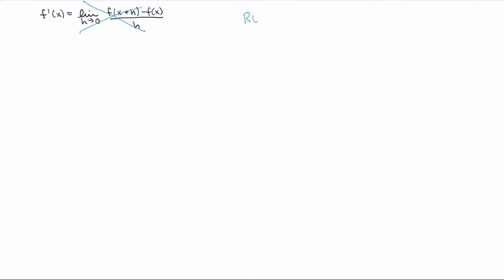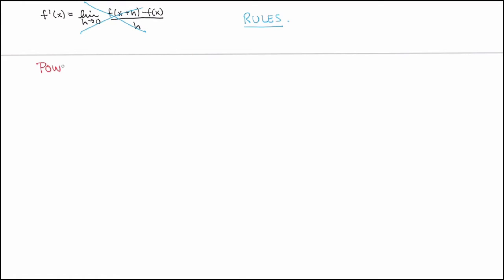So what we'll do is prove a whole bunch of differentiation rules. These are general rules — we'll prove them from the definition, but once they're proven, we can just use them to calculate the derivative of complicated functions, which will be a lot faster. The first rule we're going to see is the power rule, and it is the answer to the question asked at the end of the previous video. The power rule states that for any real number a, the derivative of x to the power of a is equal to a times x to the power of a minus 1.